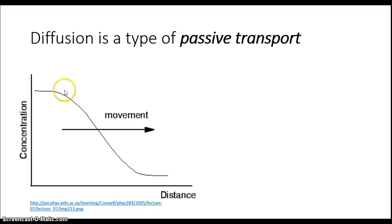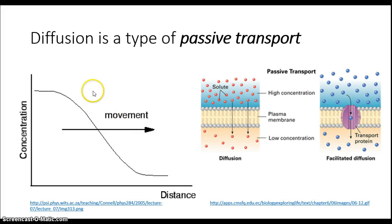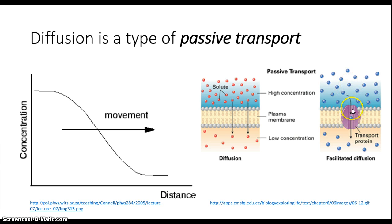This kind of movement, from high to low concentration, does not require energy at all — hence it is referred to as passive transport. There are two types of passive transport: simple diffusion, where certain molecules can go straight across the membrane by themselves; and facilitated diffusion, where if molecules have trouble — if they are charged or very large — proteins embedded in the membrane serve as channels or gates to allow these materials to move in or out of the cell along their concentration gradient from high to low concentration.